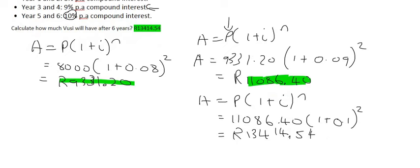Now try focus as best as you can, because if you can understand this little trick, it's going to save you a lot of time. That was the slow way. The fast way goes like this. You see this part over here? Well, that gave us 9,331 Rand and 20 cents.